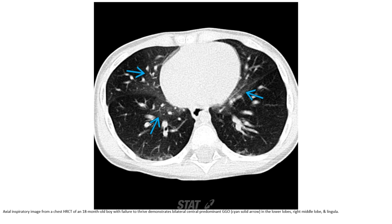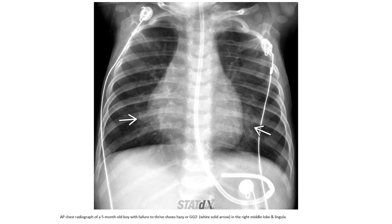Inspiratory imaging from an HR CT of an 18-month-old boy with failure to thrive demonstrates bilateral central prominent ground-glass opacity in the lower lobes, right middle lobe, and lingula. A chest radiograph of a four-to-five-month-old boy with failure to thrive shows ground-glass opacification in the right middle lobe and lingula.